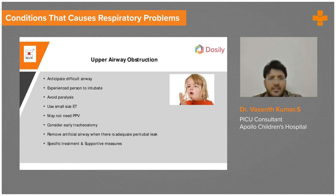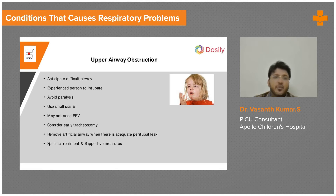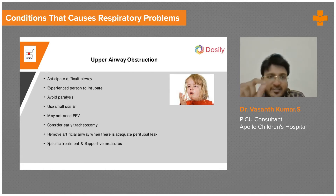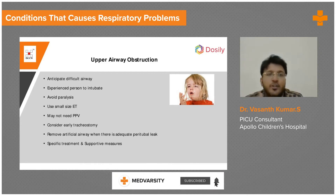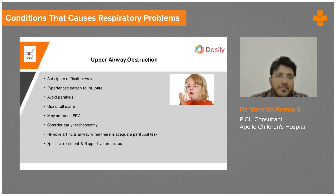For paediatrics, we usually call the help of an anaesthetist. You have an experienced person to do the job and try to maintain as much as possible spontaneous breathing. Try to avoid paralysis and try to negotiate the narrow passage. Always prefer a slightly smaller size ET tube because your job is just to bypass the obstruction. The lungs as such are normal, so you need not deliver high pressures.